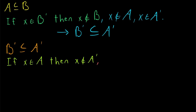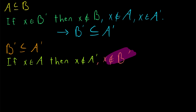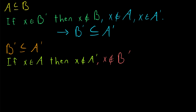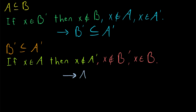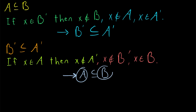Thus, since X is not an element of A complement, using similar logic as before, we know that X cannot be an element of B complement, because B complement is a subset of A complement. So if X was an element of B complement, it would also have to be an element of A complement — but it's not an element of A complement, so it's not an element of B complement. Thus, again by definition of set complement, X is an element of B. We've just shown that if any element is in A, that element is also in B. Therefore, by definition of subset, A is a subset of B. So B complement being a subset of A complement implies that A is a subset of B.